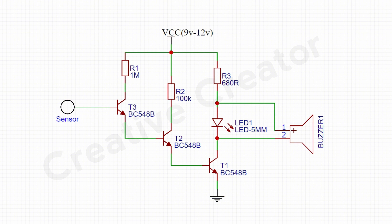So guys, let's talk about the circuit diagram first. Here I have used a BC548 NPN transistor for sensing the AC signal. When I am taking the signal wire near the 3-pin outlet, the transistor became slightly conductive. This generated signal is very weak, so we need to amplify the signal for running the LED as well as the buzzer. After that, the output of transistor 3 goes into transistor 2's base.